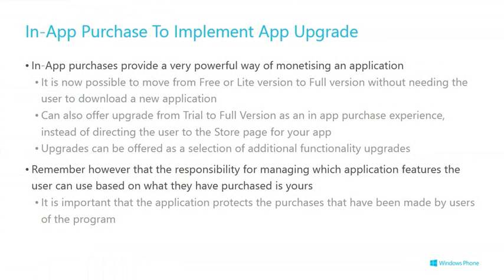Pretty simple. That was a simple example showing how in-app purchase is a great way to implement app upgrade — a very powerful way of monetizing an application. It's now possible using these mechanisms to move from a free or light version to the full version without the user needing to download a new application. In Windows Phone 7 you'd have a free version and a paid version as two different apps in the store, with nagware saying 'you could have so much more, please buy the full version.' Now we can offer a free version and unlock the full functionality from an in-app purchase — so they don't need to download another app. It's a more elegant way of getting that upgrade implemented.